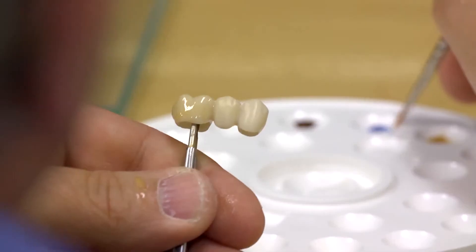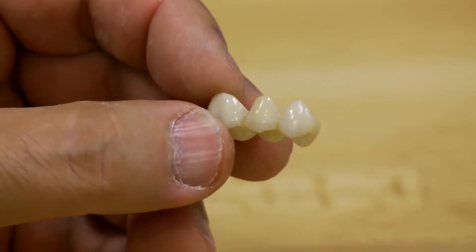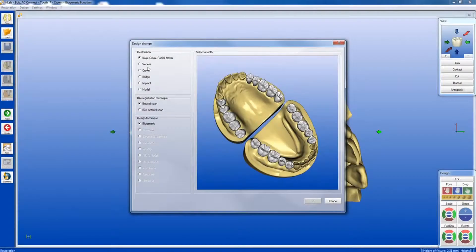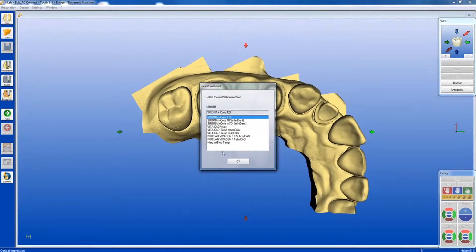You can start your case with an acquisition from your Ineos Blue scanner or a digital impression received from Sirona Connect. Under Restoration, choose Bridge Mode. This mode is required to maintain adequate minimal thickness as prescribed by this product. Under Select Material, choose Sirona Inchorus TZI. Click OK.